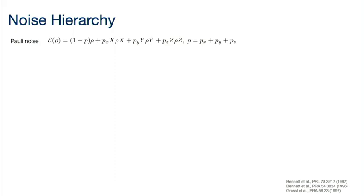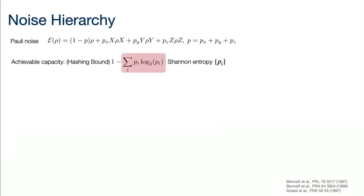If you have an IID Pauli noise channel where each qubit suffers from Pauli X, Y, or Z errors at rates px, py, and pz, then unfortunately we don't know what the quantum capacity is, but we can find a lower bound given by the hashing bound — a formula which is one minus the Shannon entropy for the probability distribution defined by the probability of errors. The higher this quantity, the higher the rate at which you can transfer information through this channel.